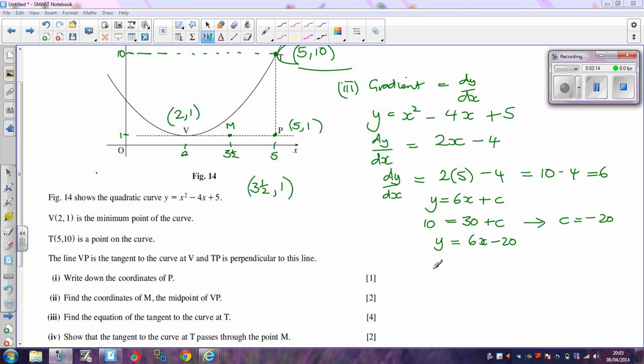What we need to do now is show that the tangent passes through the point M. Now we've just found that the equation of the tangent is y equals 6x minus 20. Now rather than putting 3.5 and 1 both into this equation, I'm going to put in 3.5 and say when x is equal to 3.5, let's find y.